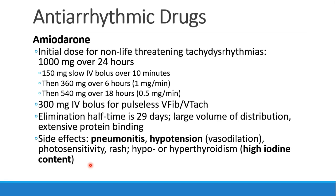When patients are having a non-life-threatening tachydysrhythmia, the goal is to get 1,000 milligrams into the patient over 24 hours. We give 150 milligrams as a slow IV bolus over about 10 minutes, then 360 milligrams over 6 hours — that's a 1 milligram per minute infusion. Then we cut it in half for the next 18 hours, and that should add up to about 1,000 milligrams.